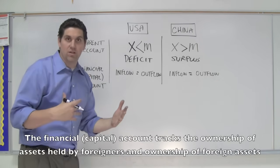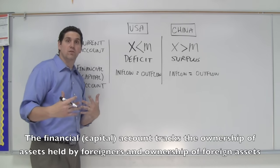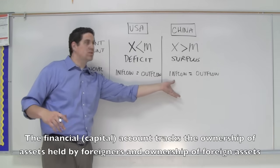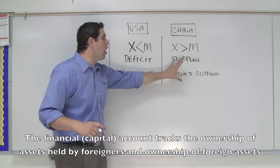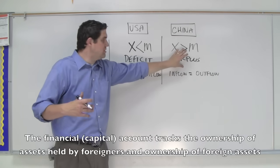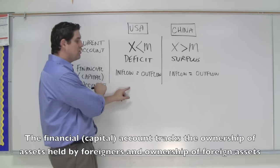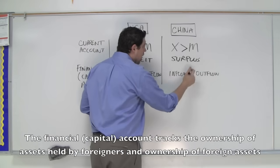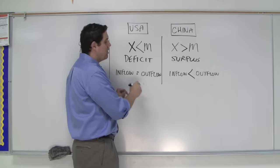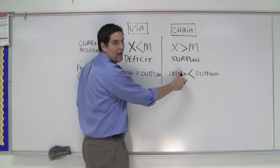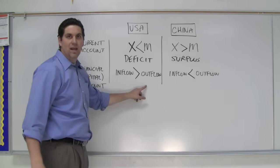The financial account looks at assets between countries. Countries can turn around and buy goods and services, but they can also buy each other's assets — their stocks and their bonds. The United States can buy Chinese bonds and stocks, or China can buy United States bonds and stocks. If China has all this money from their trade surplus, they're going to turn around and buy American assets. In the financial account, outflows are going to be greater than inflows — China is going to spend more money on United States assets than Americans are going to buy Chinese assets. And for the United States, inflows are going to be greater than outflows.